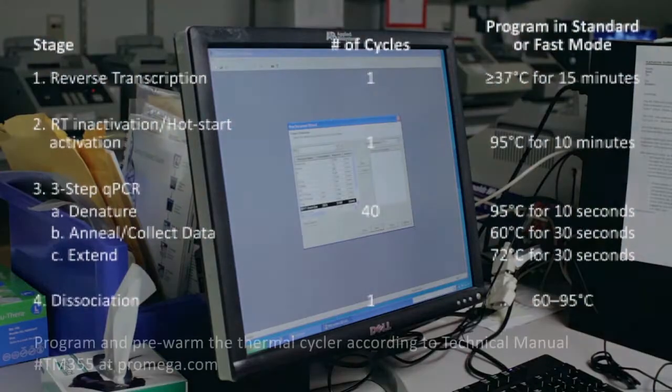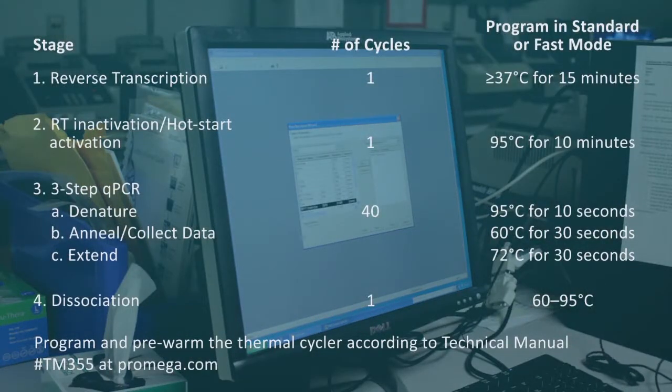Before assembling the reactions, program and pre-warm the thermal cycler according to recommendations in technical manual number TM355, found at promega.com.